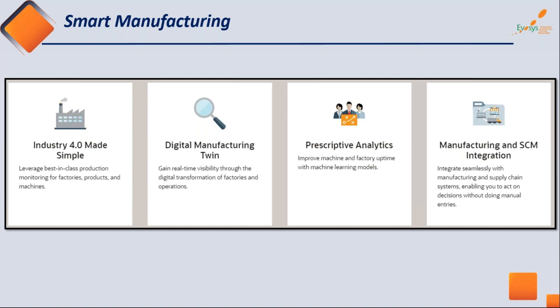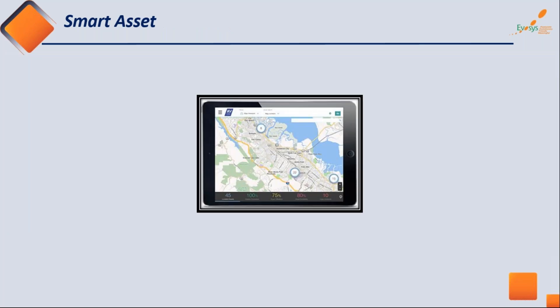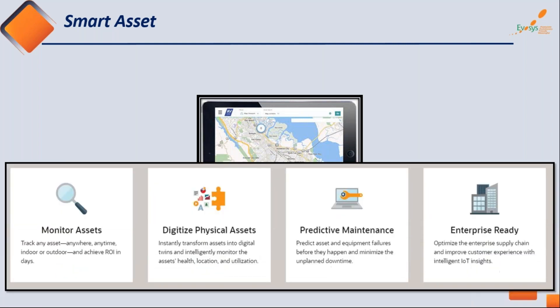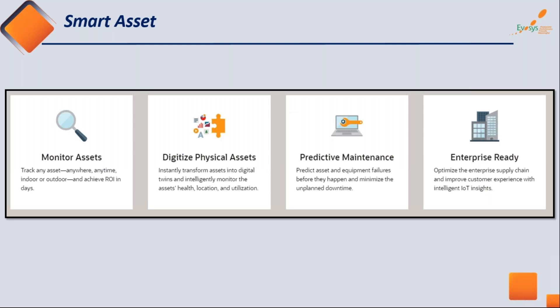The last use case — smart assets — is very important when you have a large number of assets in an organization, especially in construction and manufacturing, which need to be tracked not only for operational reasons but also for misuse, theft, or compliance purposes. We can monitor and digitalize assets — including creating a digital twin for assets.